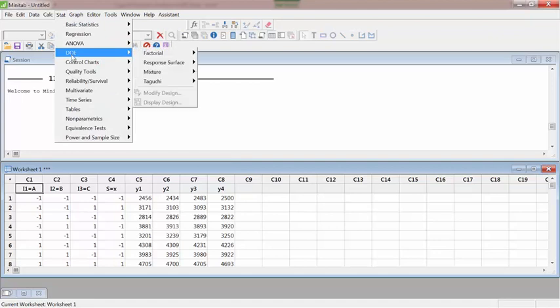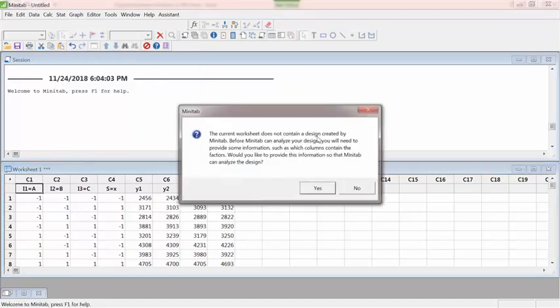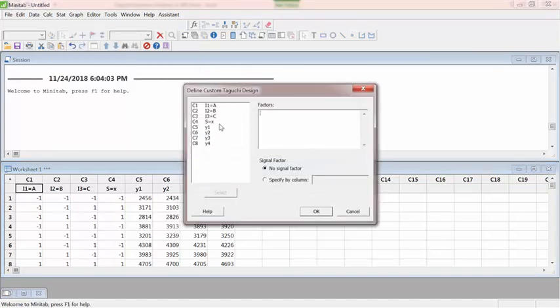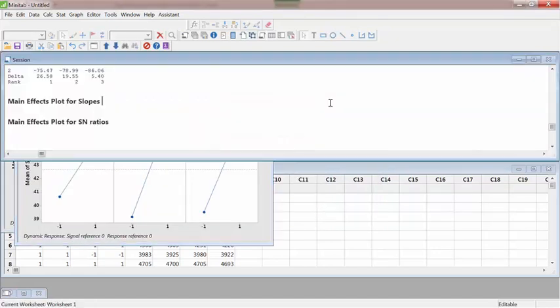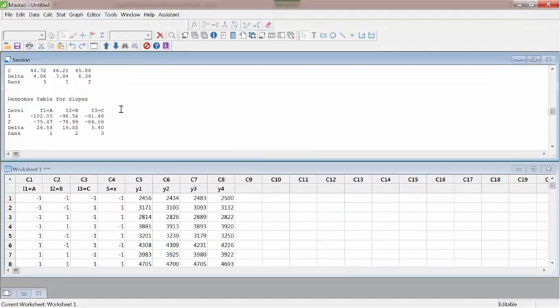So go to Stat, DOE and Taguchi, Analyze, then select the factors. So the three internal factors. I have a signal factor which is in column S and then I have the response in Y's. Then leave everything as it is. So this is the dynamic analysis.